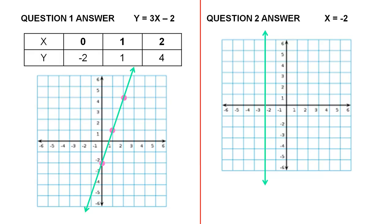So there's question one, where we're graphing the line y equals 3x minus 2. And for question two, we're graphing the line x equals negative 2.